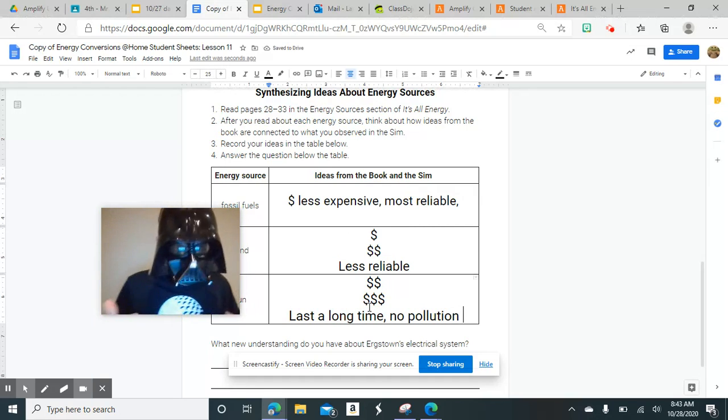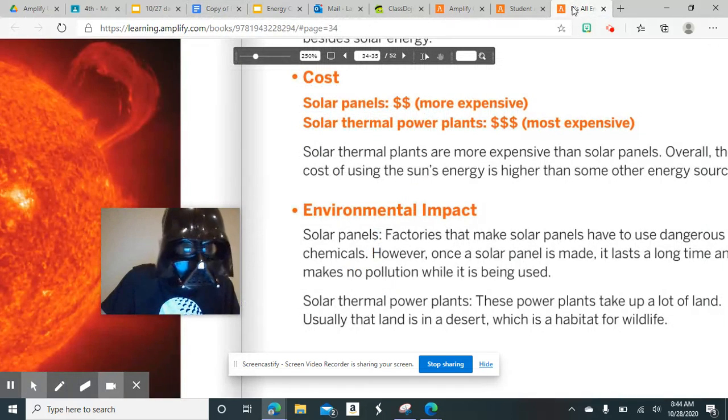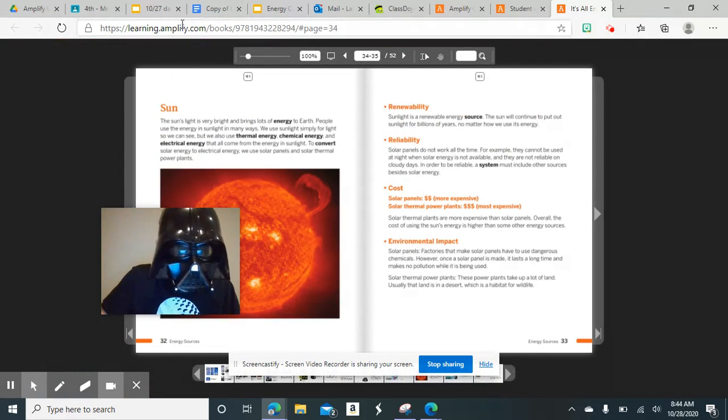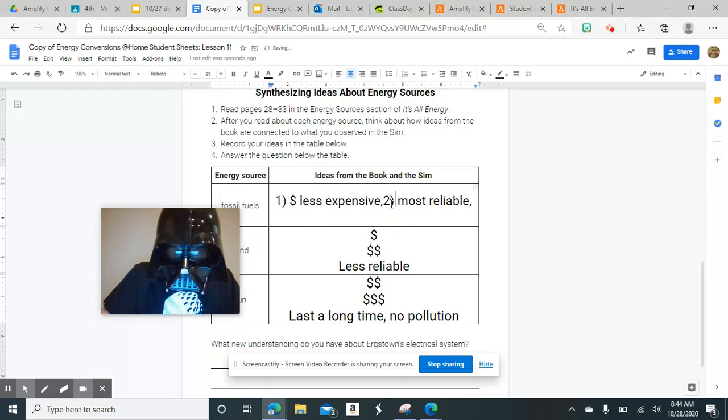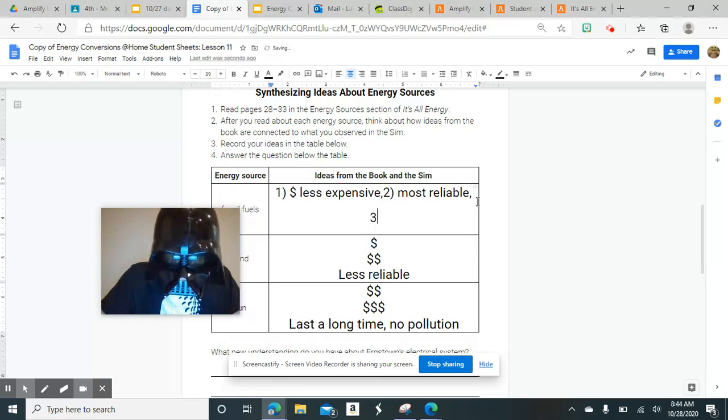So today in class, you're going to be finishing this activity. If you're having to watch this at home, then you want to be using your book, It's All Energy, to read and research. Each thing should have three different options. So you should have its cost, you should have its reliability, and you should also have its environmental impact. You should have three for each of these.